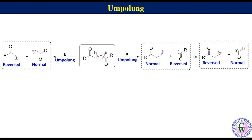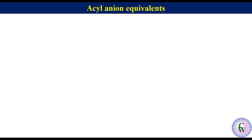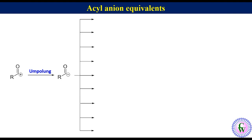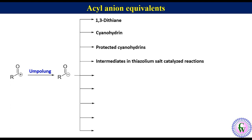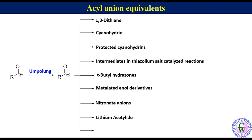With the discussion we have done so far, we are now able to understand umpolung. Next we are going to discuss different synthetic equivalents for fragments with reversed polarity. First are acyl anion equivalents. The carbonyl carbon is electrophilic in nature; if we can revert it from electrophilic to nucleophilic, this modification is called umpolung. There are several synthetic equivalents to the acyl anion, like 1,3-dithiane, cyanohydrin, protected cyanohydrins, intermediates in thiazolium salt catalyzed reactions, t-butyl hydrazones, metallated enol derivatives, nitronate anions, lithium acetylide, and cyanide ion.